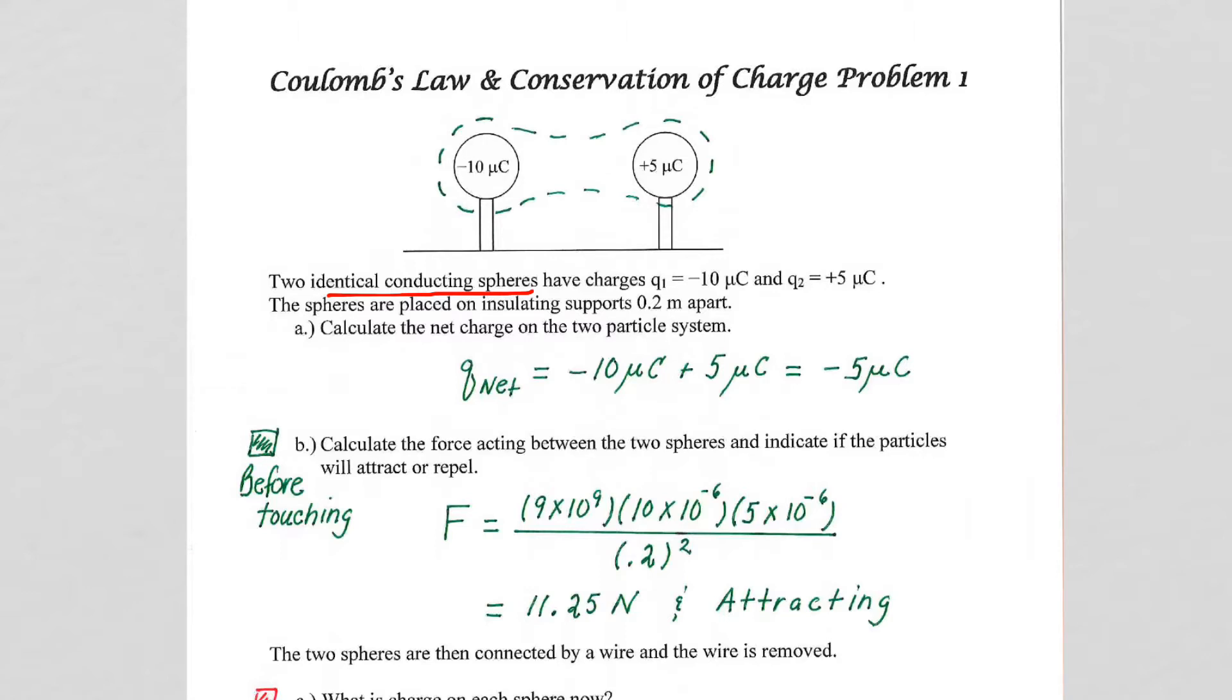We are told that the first sphere has a charge of negative 10 microcoulombs, and the second sphere has a charge of positive 5 microcoulombs. When we're talking about conservation of charge, we're always referring to net charge of the system, so that's why I have my little peanut-ed coupled system here. The net charge of the system is simply adding and subtracting the charges, so negative 5 microcoulombs.